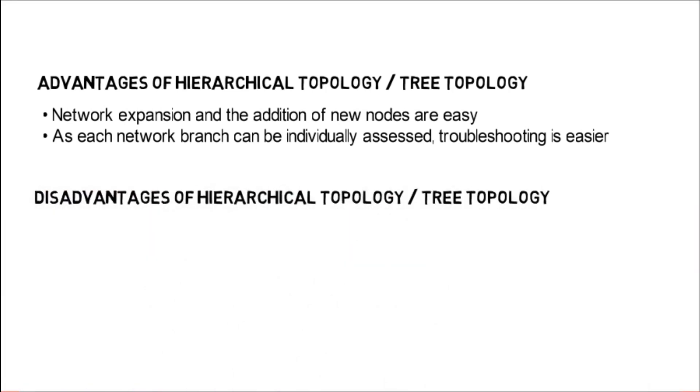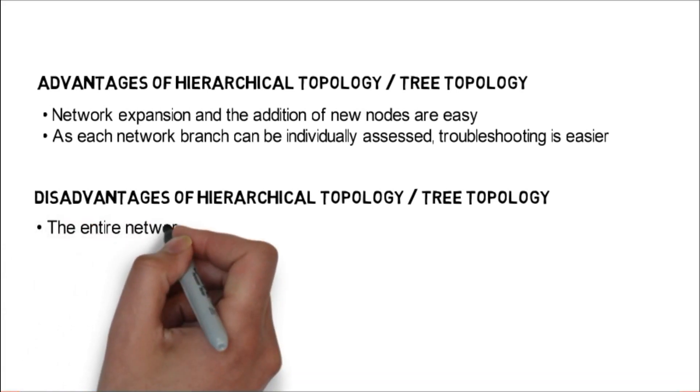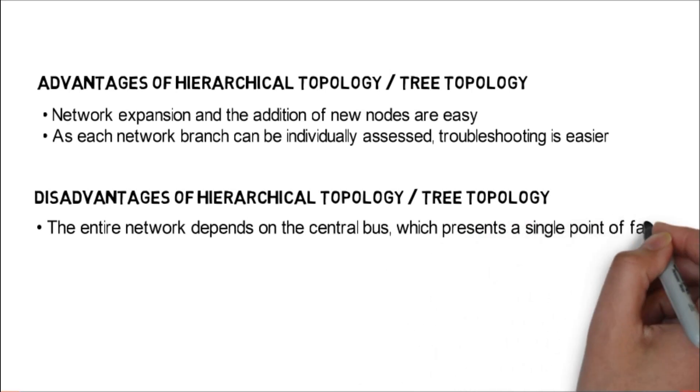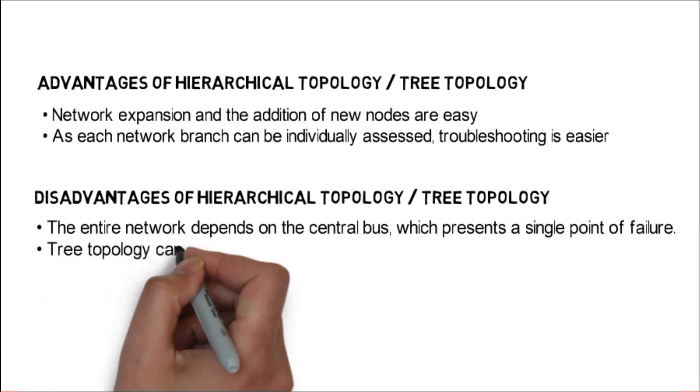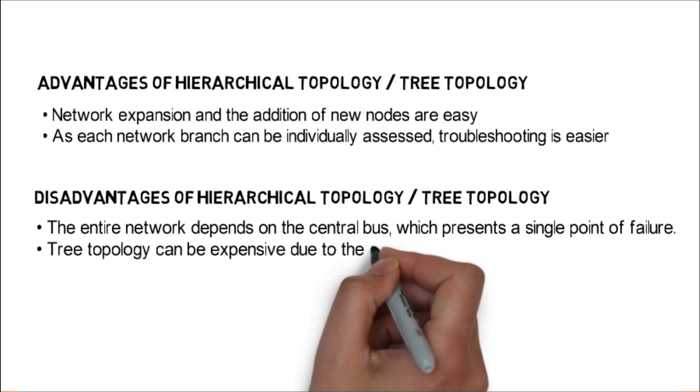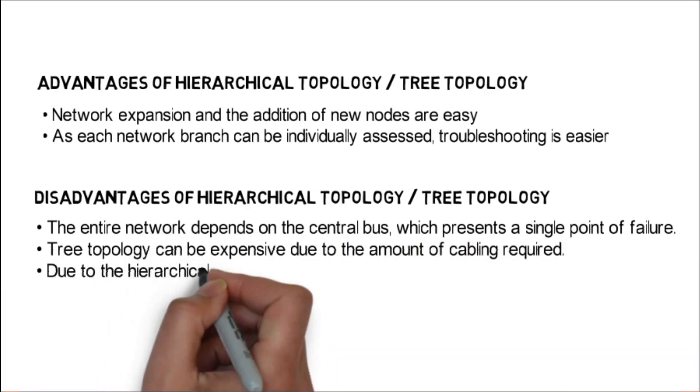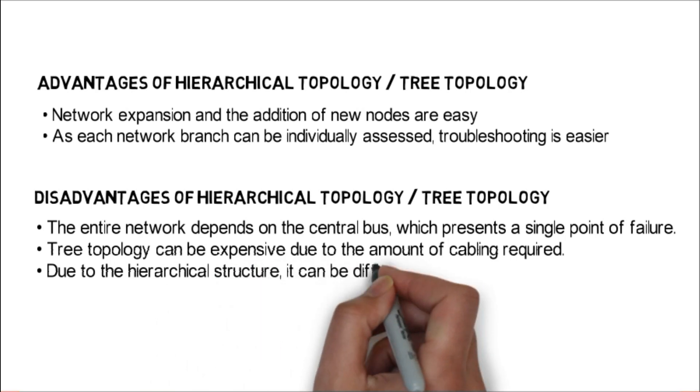Disadvantages of hierarchical topology or tree topology: the entire network depends on the central bus, which presents a single point of failure. Tree topology can be expensive due to the amount of cabling required. Due to the hierarchical structure, it can be difficult to configure.